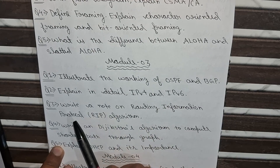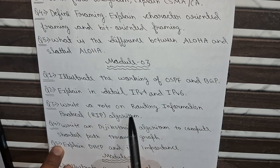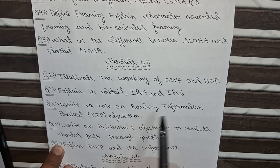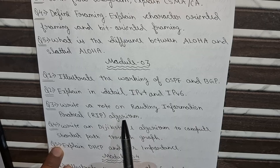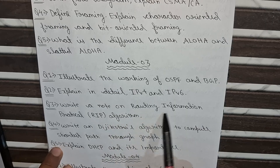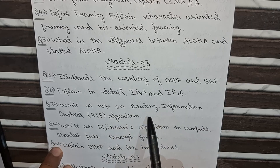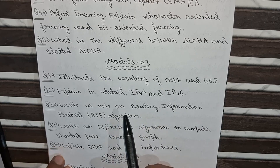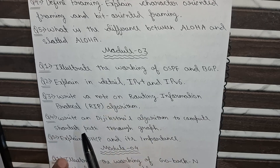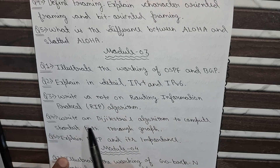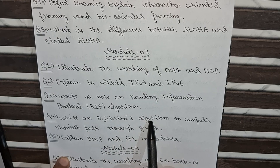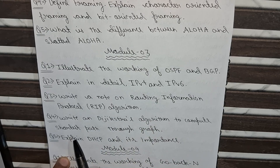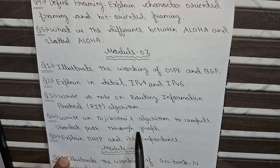The third question is: Write a note on the Routing Information Protocol (RIP) algorithm. This algorithm is very important, please remember it. The fourth question is: Write Dijkstra's algorithm to compute the shortest path through a graph.